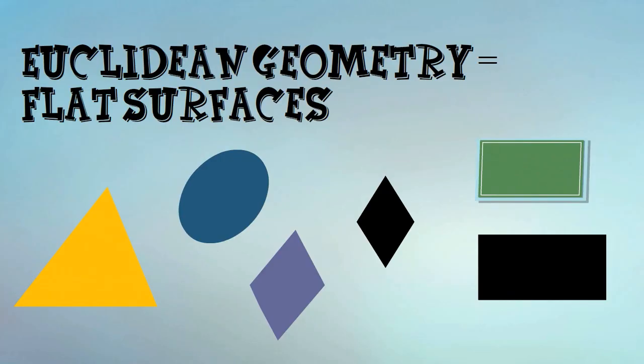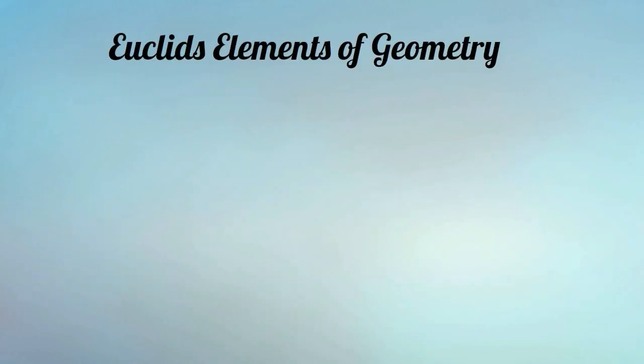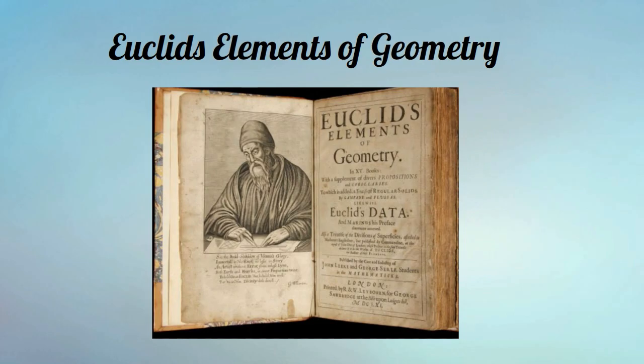Euclid wrote 13 books called the Elements and developed the first comprehensive discussion of geometry.